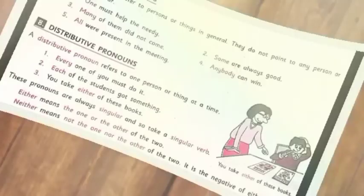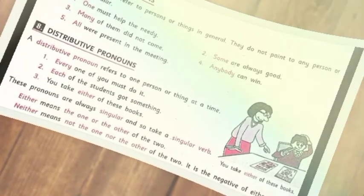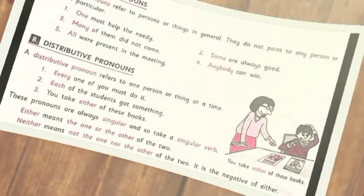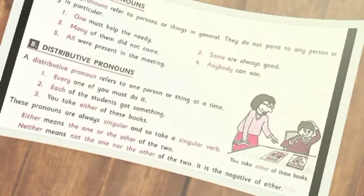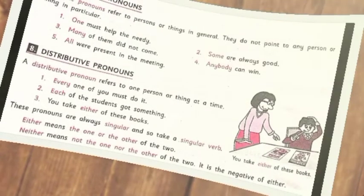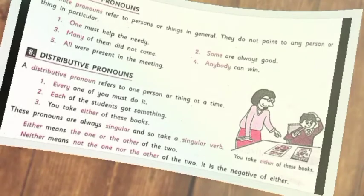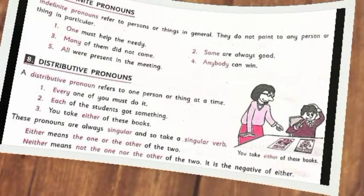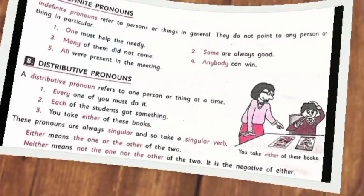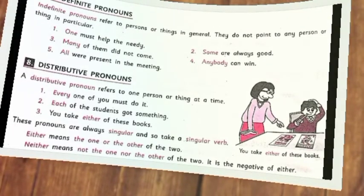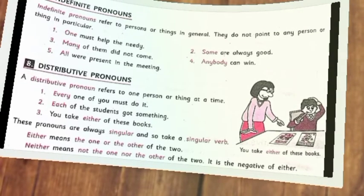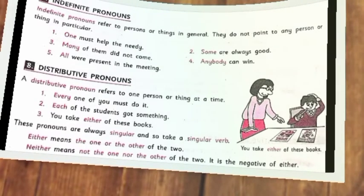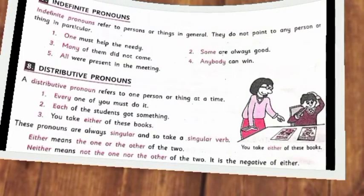The seventh kind of pronoun is indefinite pronouns. What are indefinite pronouns? Indefinite pronouns refer to persons or things in general. They do not point to any particular person or thing. For example: 'One must help the poor.' Here, the indefinite pronoun is 'one.' Another example: 'Many of them did not come.' The indefinite pronoun is 'many.' It is used in general — we don't know who they are.